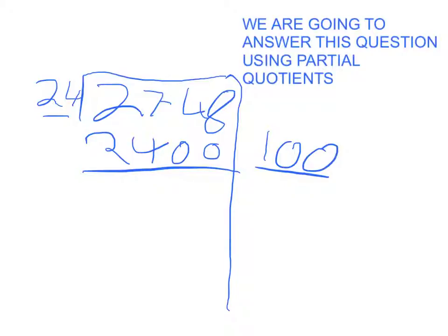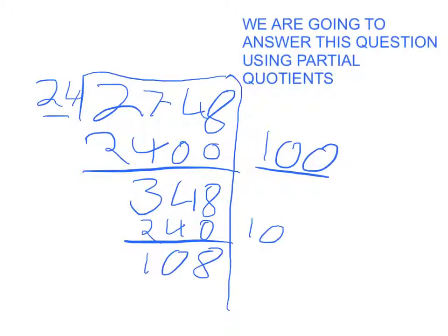So if I minus that, I'll get 348. Now I'm going to subtract 240, which I know is 10 times 24, which gives me 108. Now I'm going to subtract 96.